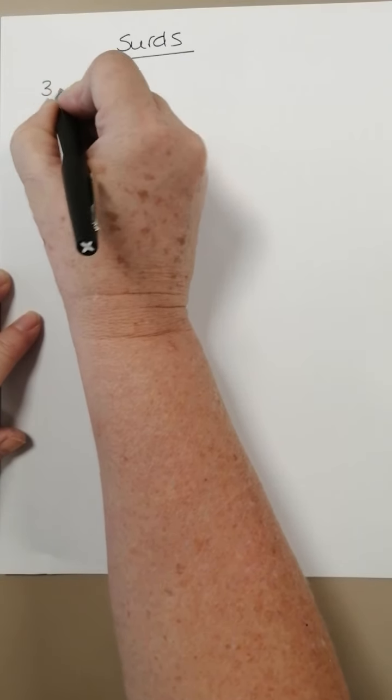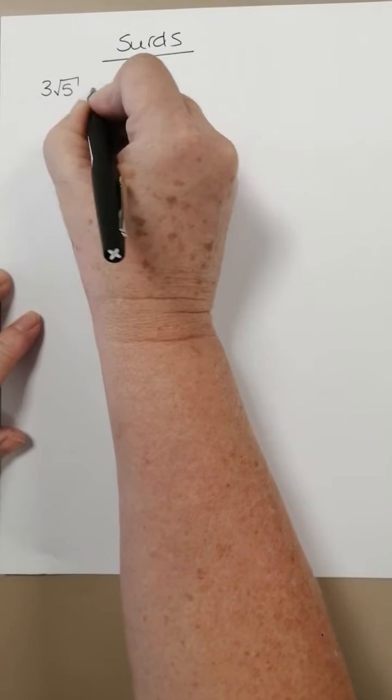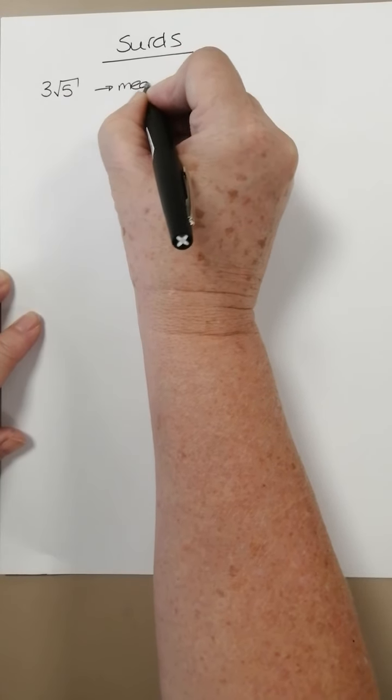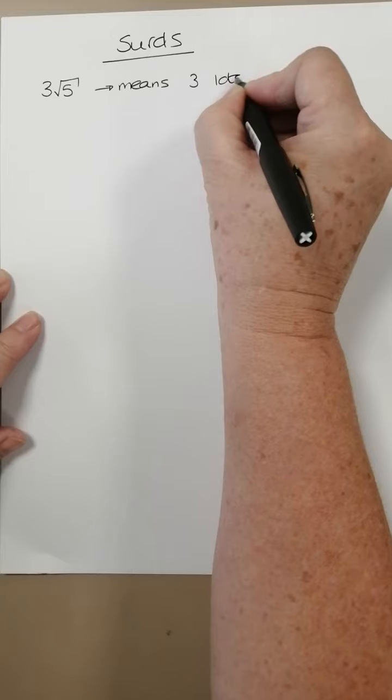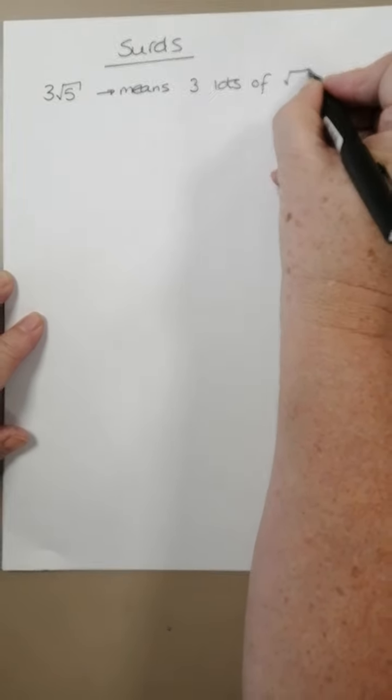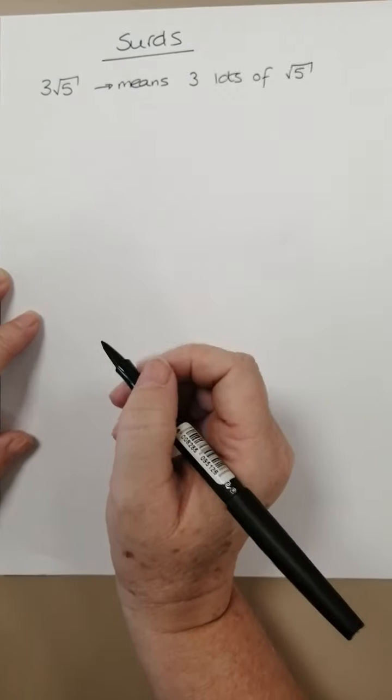So first of all, if we have something like this, 3 root 5, then that means 3 lots of square root of 5.